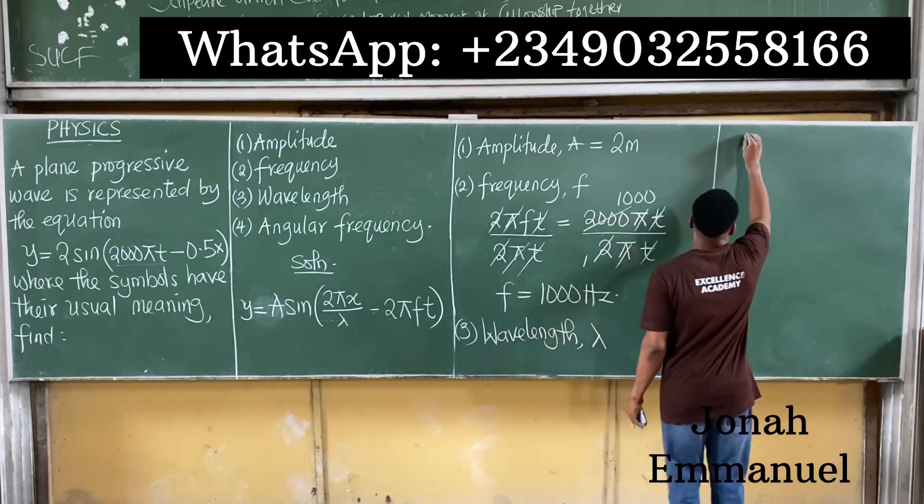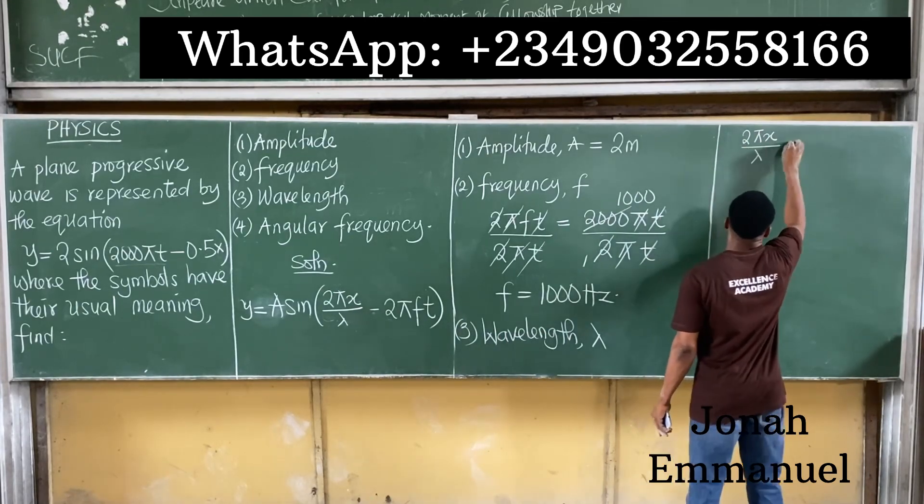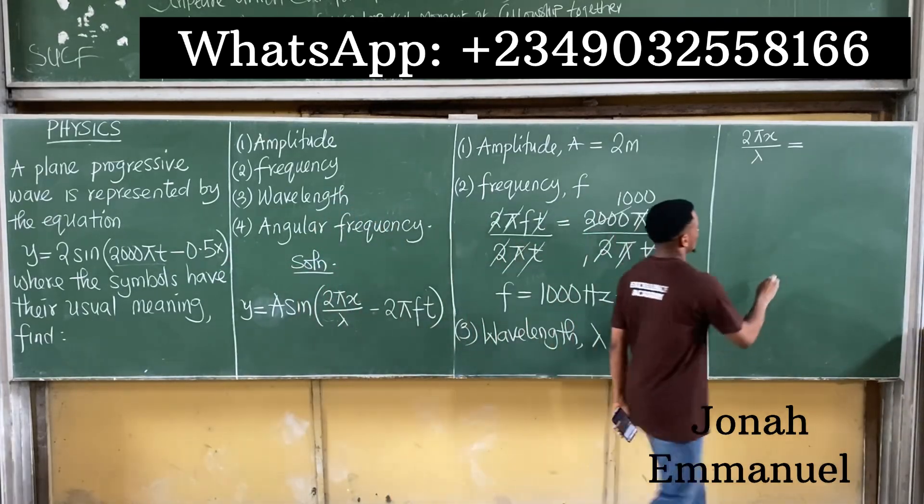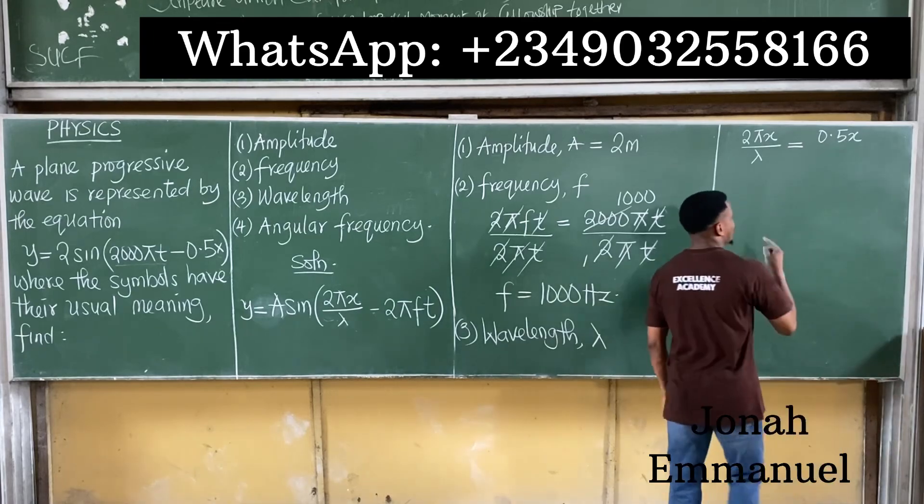So if that's true, I'll have that this. For this, we'll have that 2πx/λ will be equal to this one having x here, 0.5x. I'm having 0.5x. Let's solve for lambda.